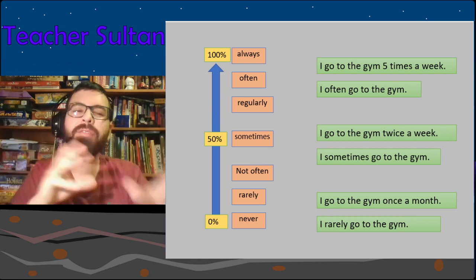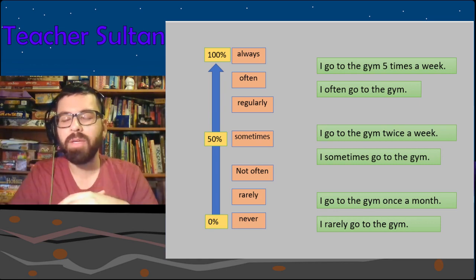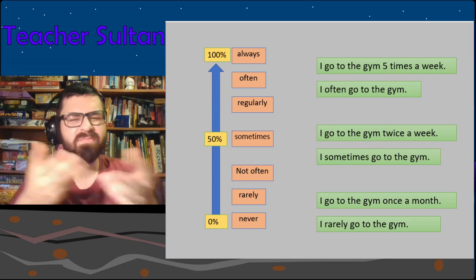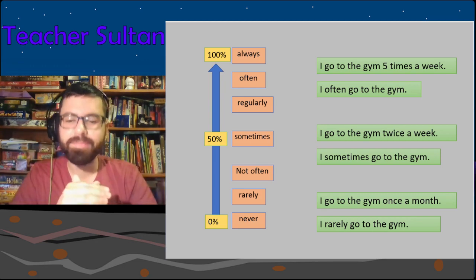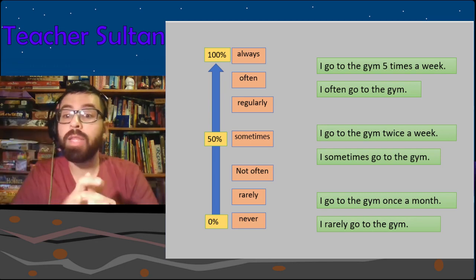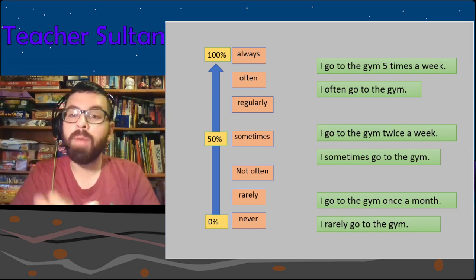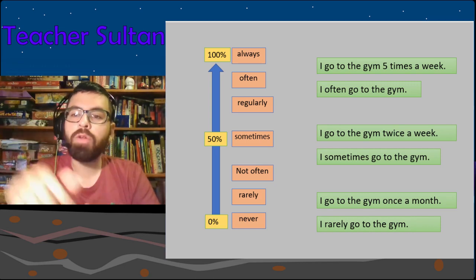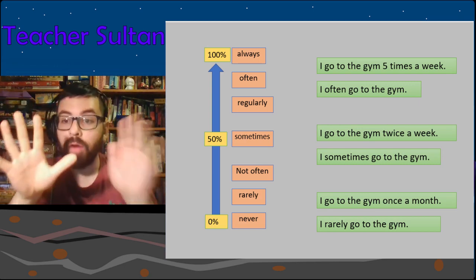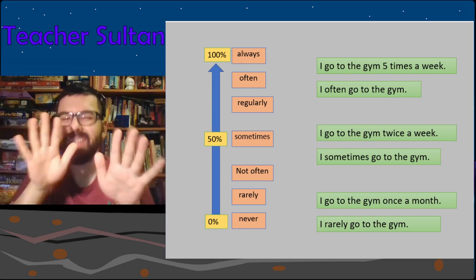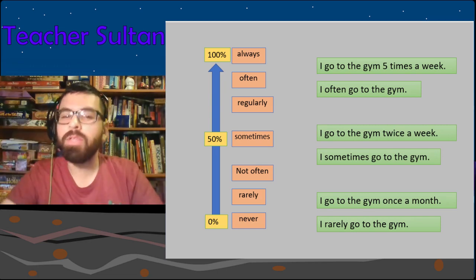'Always' is like every day — for example 'I always brush my teeth.' It means something you do every day. Look at the green examples: 'I go to the gym five times a week' has a similar meaning to 'I often go to the gym.' Read through those other examples there.